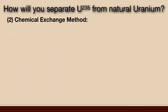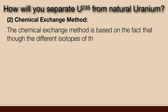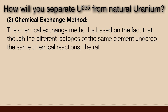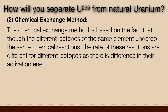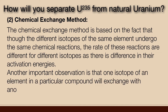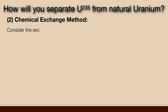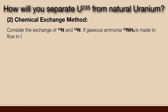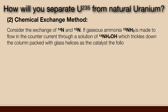Chemical exchange method. The chemical exchange method is based on the fact that though different isotopes of the same element undergo the same chemical reactions, the rate of these reactions is different for different isotopes, as there is a difference in their activation energies. Another important observation is that one isotope of an element in a particular compound will be exchanged with another isotope of the same element in another compound. Consider the exchange of nitrogen-14 and nitrogen-15: if gaseous ammonia containing nitrogen-15 is made to flow counter-current through a solution of ammonium hydroxide of nitrogen-14, which trickles down a column packed with glass helicals as the catalyst, the following exchange is observed.